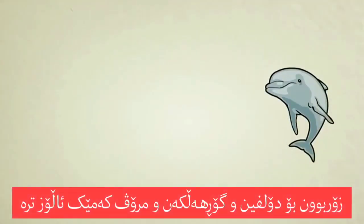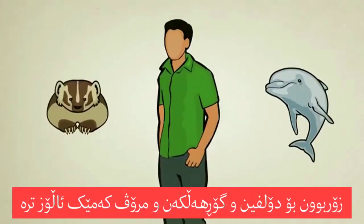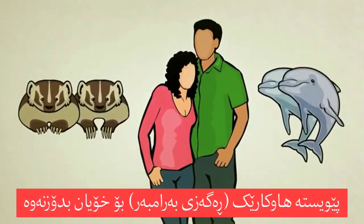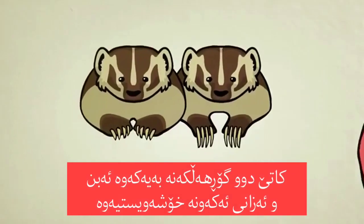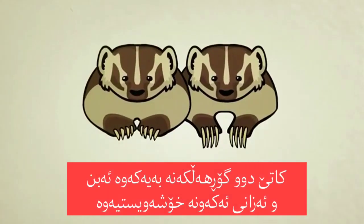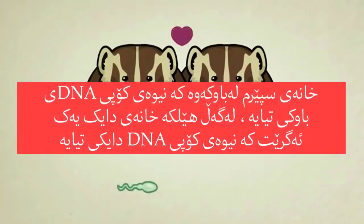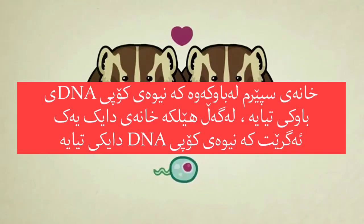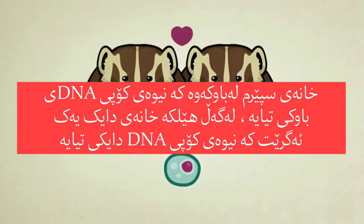Reproduction for dolphins and badgers and people is a little more complicated — we have to find ourselves a partner. When two badgers get together and fall in love, a sperm cell from the father, which contains a copy of half of his DNA — only half — combines with the egg cell of the mother, which contains half a copy of her DNA.